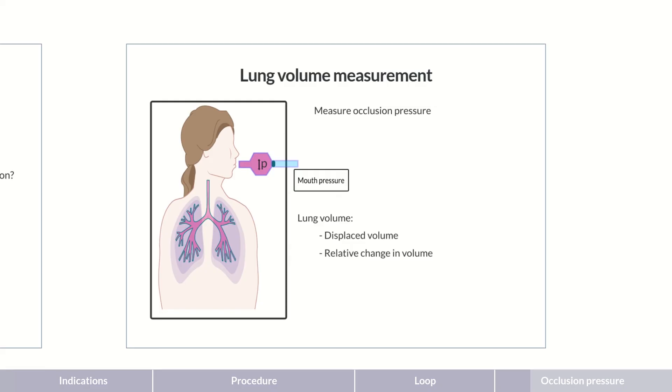The negative pressure in the alveoli responsible for inspiration remains and spreads to the mouth. Therefore, we can assume that the pressure measured in the mouthpiece corresponds to the pressure in the alveoli. Perhaps you've already noticed that when the valve is closed, the lungs are transformed into a closed system.